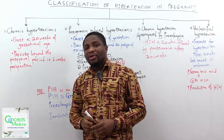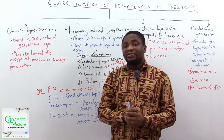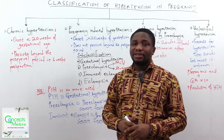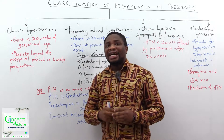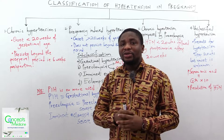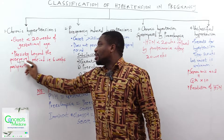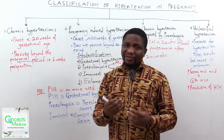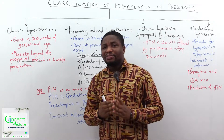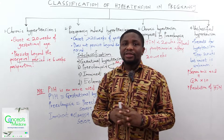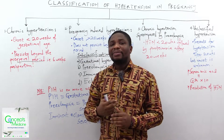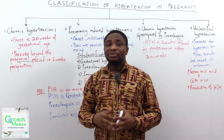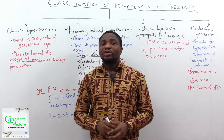When we say chronic hypertension, it means that the onset of the hypertension is before 20 weeks of gestation, and the hypertension persists beyond the puerperal period — that is, six weeks postpartum. If the hypertension persists beyond six weeks postpartum, it tells you that the hypertension was there even before the woman got pregnant. That is why we refer to it as chronic hypertension.